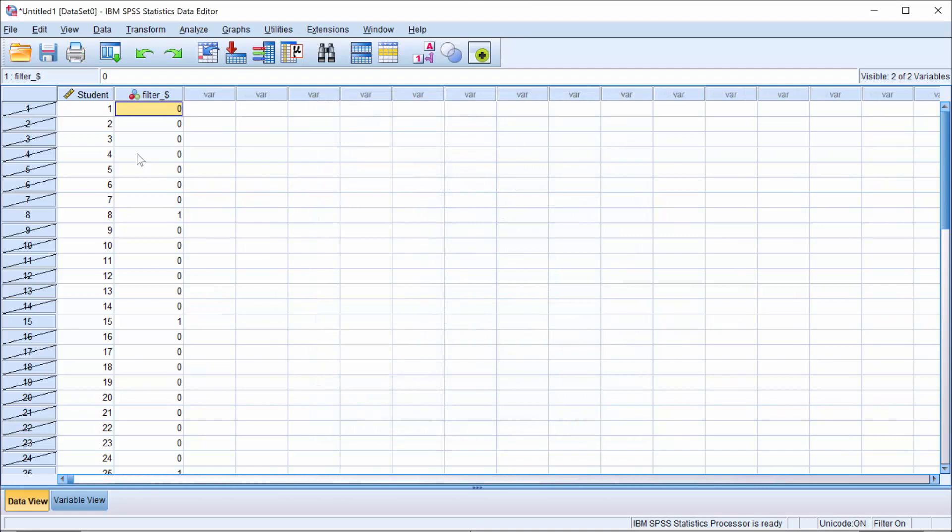Here we are back at the data window. SPSS has created a filter everywhere that you see a one, that student has been selected. And everywhere you see a zero, those students have been crossed out.